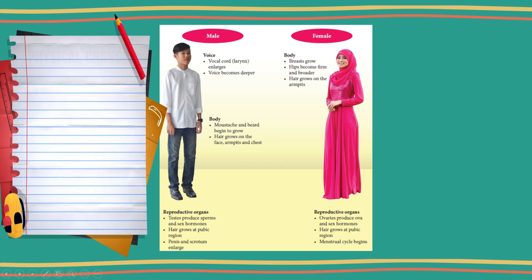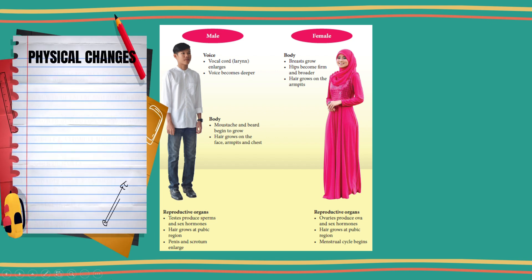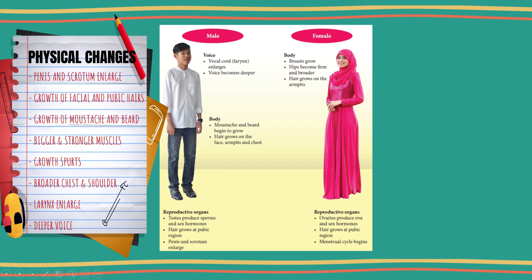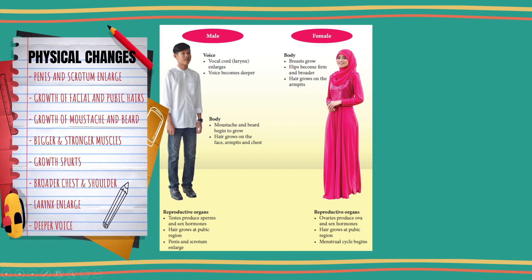Some of the physical changes that occur in males during puberty are: the penis and scrotum enlarge, facial hair starts to grow, and hair appears in the pubic region and armpits, growth of mustache and beard, muscles start to grow bigger and stronger, growth spurts or accelerated height and weight gain, broadening of the chest and shoulders, and enlargement of the larynx or vocal cord, causing deepening of the voice.